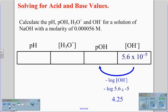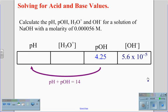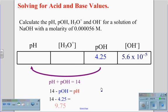This will be our pOH value. Now that we have the pOH value, we can convert that to our pH value. We will do this using the equation pH plus pOH equals 14, so 14 minus the pOH will give us the pH value. 14 minus 4.25 gives us a pH value of 9.75.